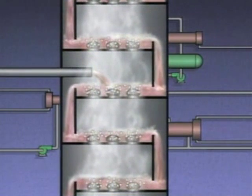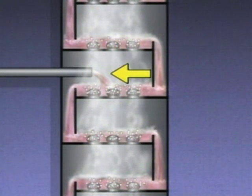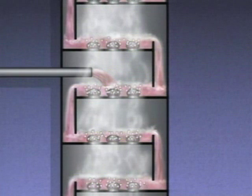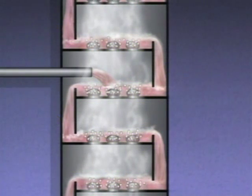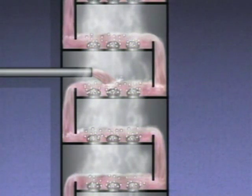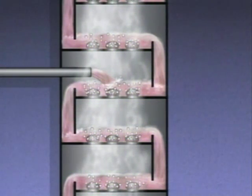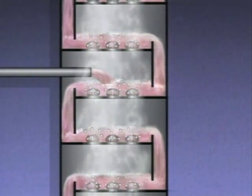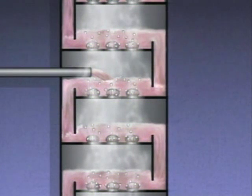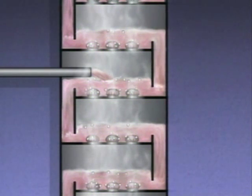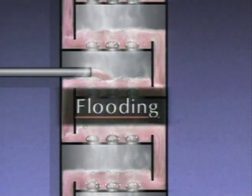For example, if the feed rate for this tray column is too high, the liquid will back up in the downcomers and build up on the trays. The increase in hydrostatic pressure restricts the vapor rising through the liquid. If overloading continues, more and more liquid backs up, and the rising vapor becomes severely blocked. This condition is known as flooding.